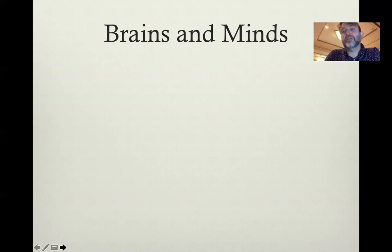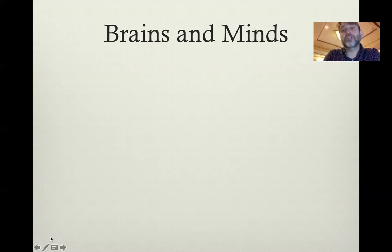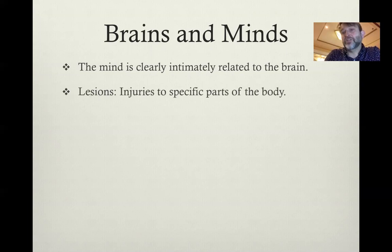Before the 19th century — in the 18th century and before — you might have been excused for thinking that minds were totally located in an immaterial substance that had only incidental connection to the body, because before that point it hadn't really been discovered how deep the connections were between different brain areas and different mental capacities. Nowadays we know the mind is clearly intimately related to the brain, but how did all this knowledge start?